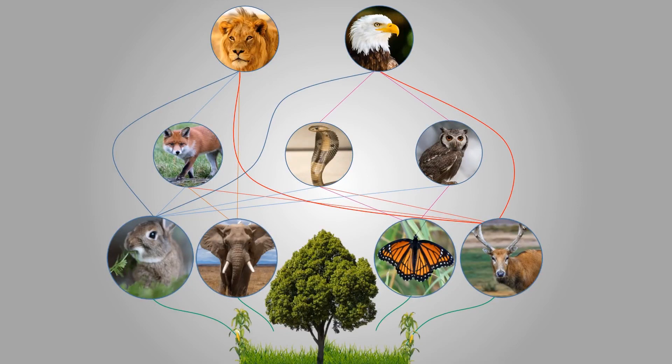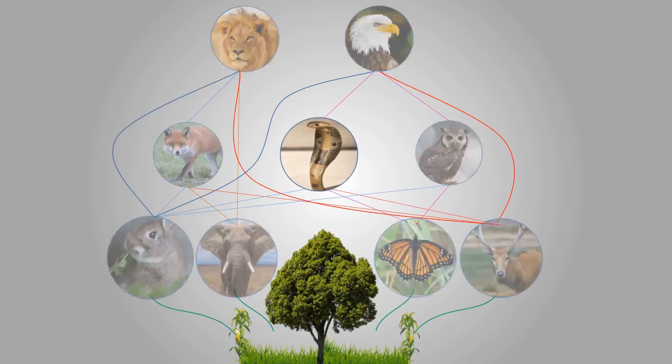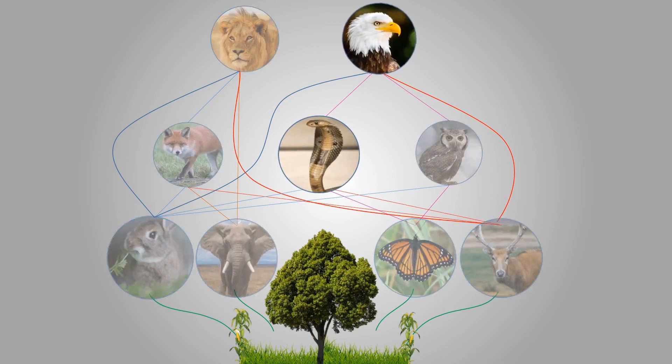Now tell me, what will happen if the number of organisms at a level rises or decreases suddenly? For instance, if the number of snakes are reduced, it will ultimately affect the number of eagles which are directly dependent on them for food. And this will create an imbalance in the ecosystem. Therefore, it is necessary to maintain balance in a food web.